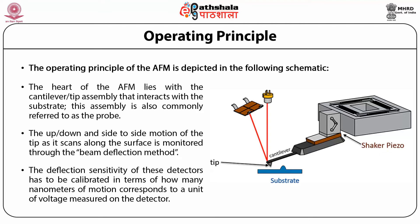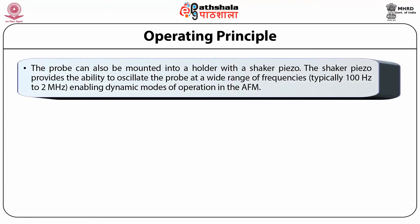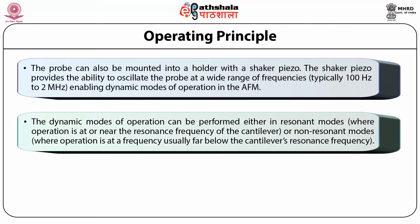The deflection sensitivity of these detectors has to be calibrated in terms of how many nanometers of motion correspond to a unit of voltage measured on the detector. The probe can also be mounted into a holder with a shaker piezo, which provides the ability to oscillate the probe at a wide range of frequencies — typically between 100 Hz to 2 MHz — enabling the dynamic modes of operation in AFM. These dynamic modes can be performed either in resonant modes or in non-resonant modes.